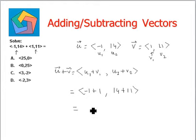Negative 1 plus 1 is 0 while 14 plus 11 is 25. Therefore, 0 comma 25 is the final answer. Can be seen in option B.